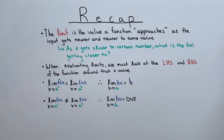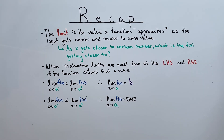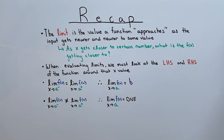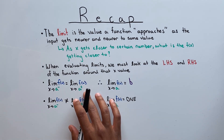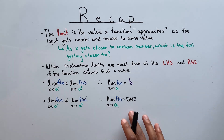So in recap, the limit is defined as the value a function approaches as the input gets nearer and nearer to some value. Or in other words, as x gets closer to a certain number, what is the f of x getting closer to? When we are evaluating limits, we must look at the left-hand side and the right-hand side of the function around the x value. If the limit from the left-hand side equals the limit from the right-hand side, then we say that the limit of the function as x approaches some number equals that y value. And if the limit from the left-hand side does not equal the limit from the right-hand side, then we say that the limit of the function as x approaches that number does not exist.